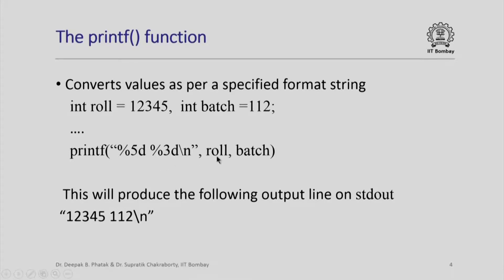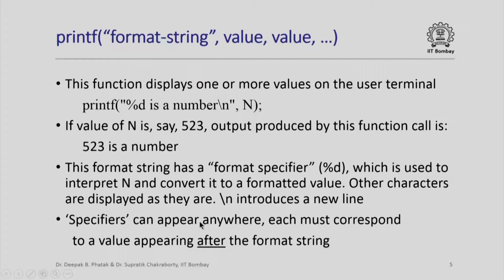%5d is used to convert the value of role into a 5-digit output number. Similarly, %3d is used to convert the integer batch value 112 into a 3-digit output value. The general format of printf displays one or more values on the terminal. If the value of n is 523, this printf statement will produce "523 is a number". Here %d is the only format specifier with no width, so it simply converts n and prints whatever number of digits n has. Other characters in the format string are reproduced verbatim, including the newline.